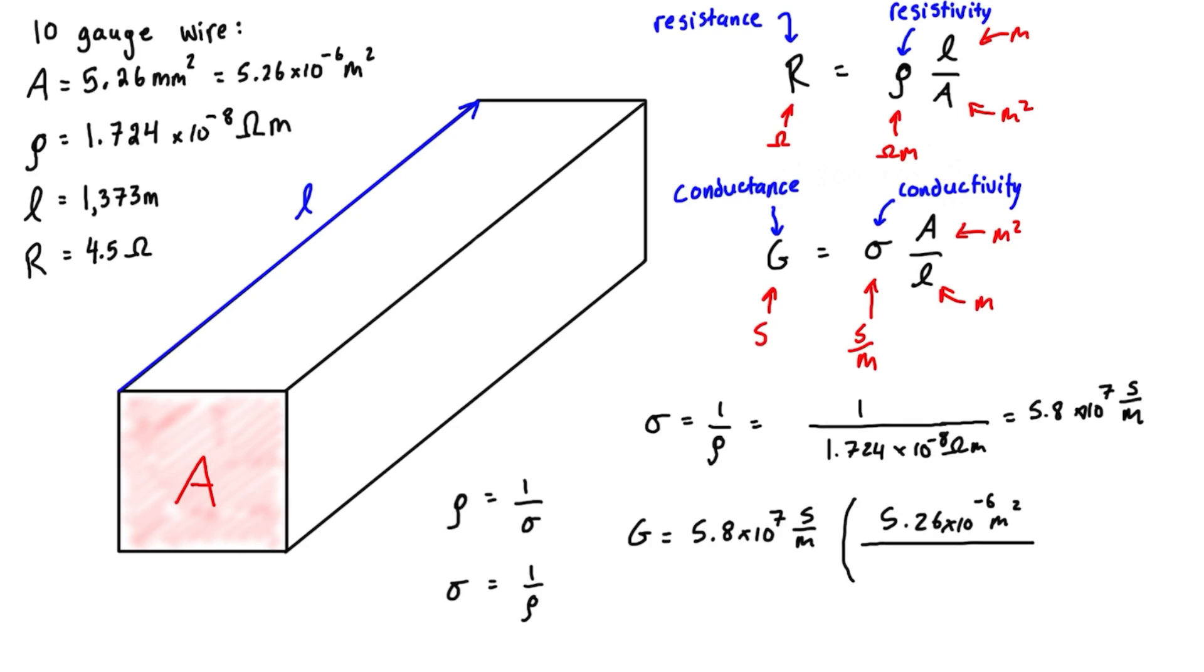You'll see that we have meters squared on top and two meters on the bottom, so we're left with units of Siemens.